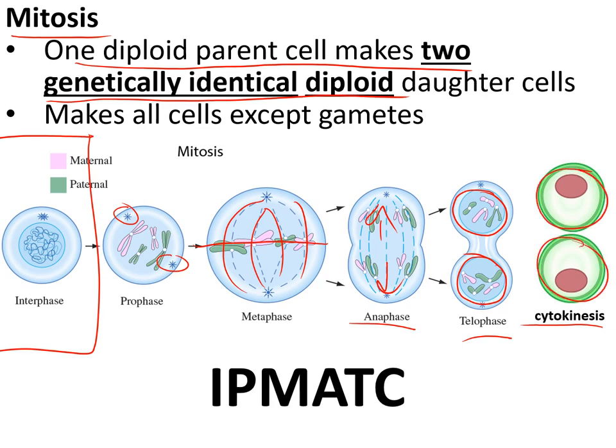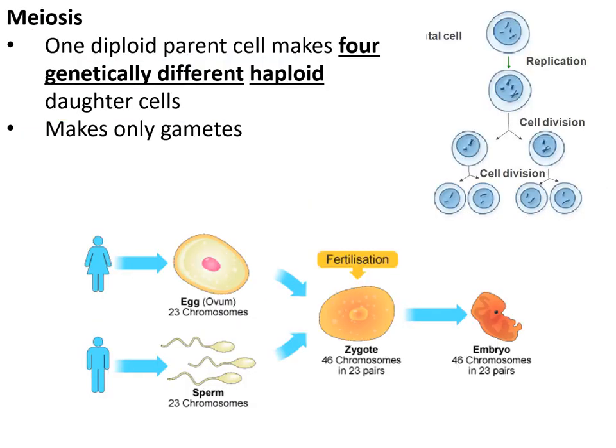Haploid cells are made by meiosis, in which one diploid parent cell makes four genetically different haploid cells. This makes the gametes — your sperm cells and egg cells.